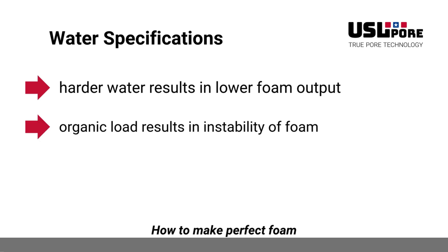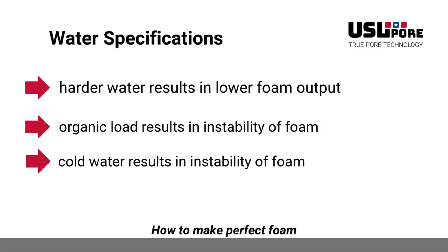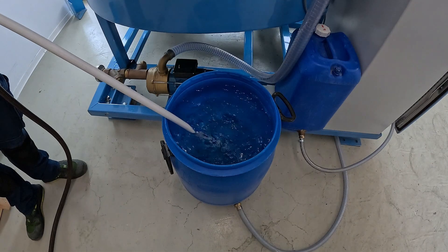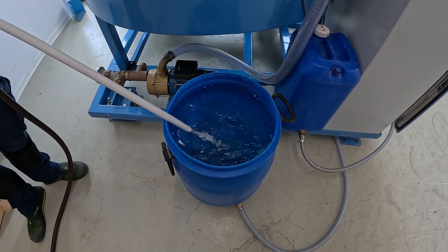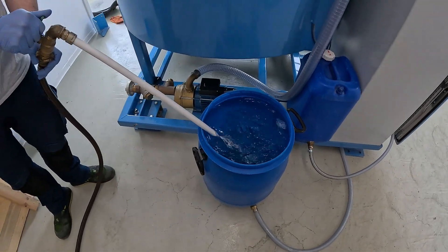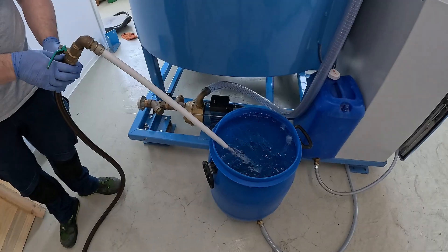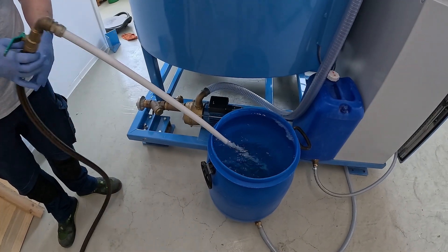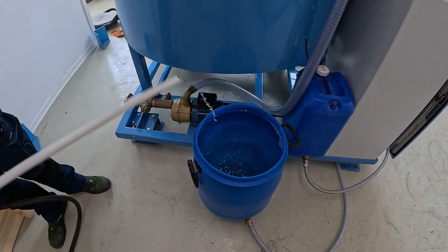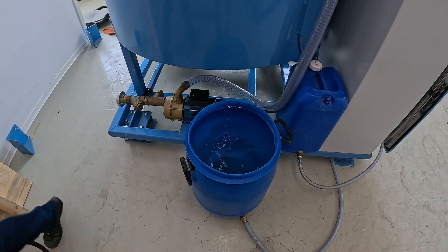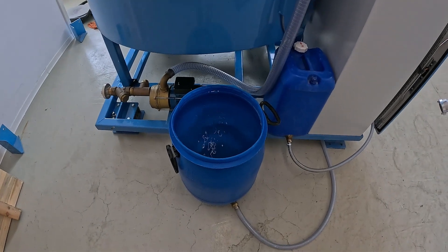Organic load in the water — for example well water or unfiltered river water — can result in foam instability. Cold water below 12 degrees Celsius (54°F) leads to lower foam stability. We therefore recommend keeping the water at a constant temperature of around 20 degrees Celsius (68°F). Our professional foam generators do this automatically. If tap water is not available, we additionally recommend filtering your water.